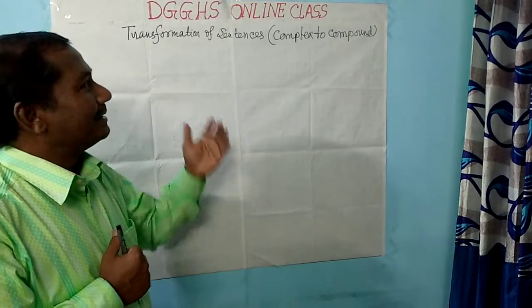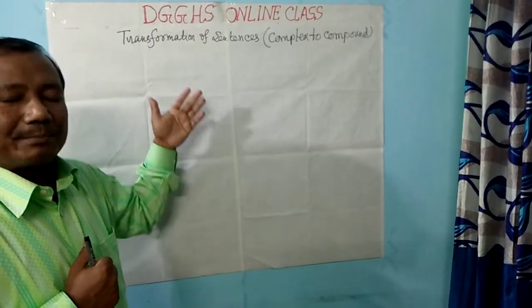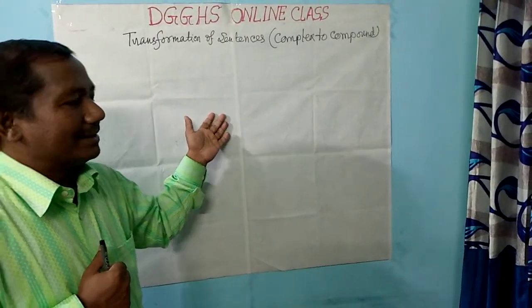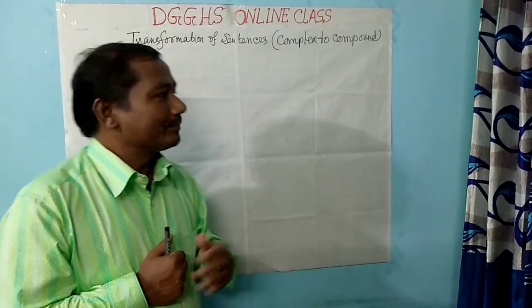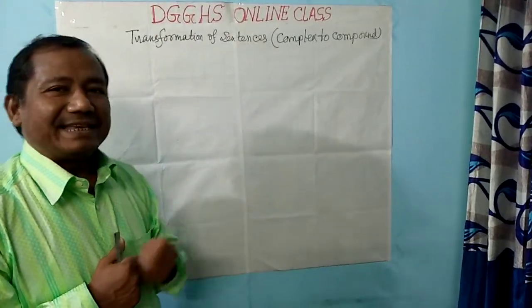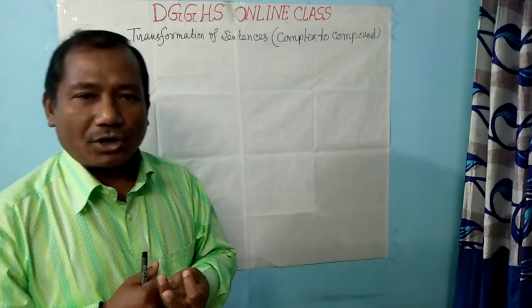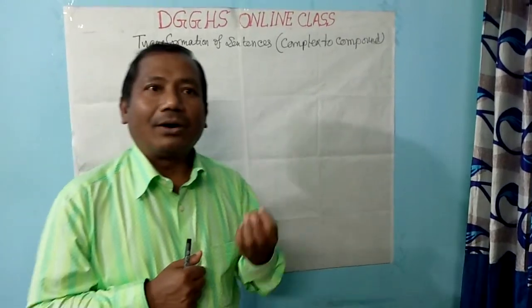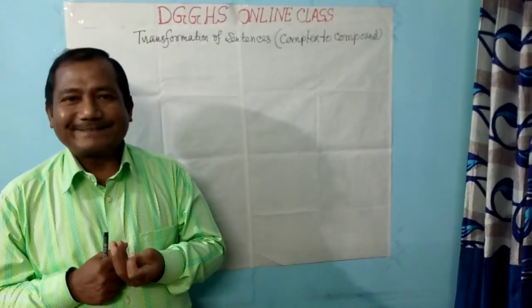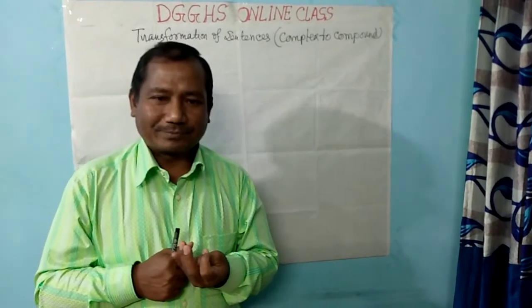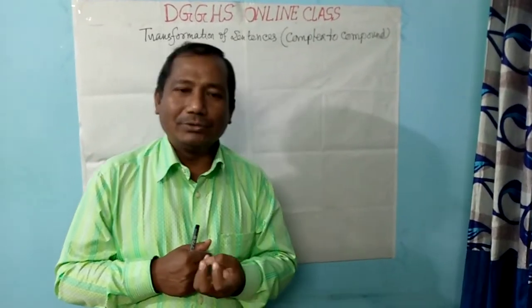So the conjunctions that are used in a complex sentence — what are they? They are: since, as, because, when, so...that, though, although.